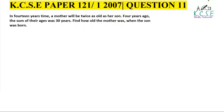Welcome. Let us do this question: KCC Paper 1, 2007, Question Number 11. It reads: 'In 14 years time, a mother will be twice as old as a son. Four years ago, the sum of the ages was 30 years. Find how old the mother was when the son was born.' We're going to begin by writing the expressions of the ages in these different years.